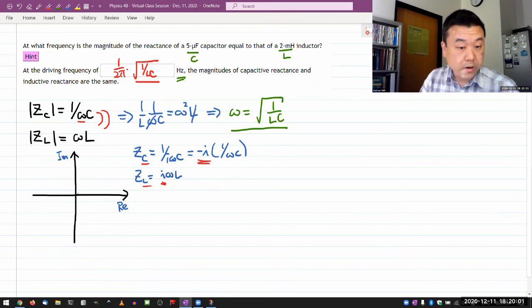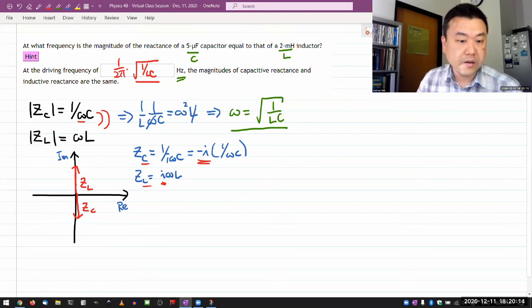So this frequency is where the magnitudes of these two impedances are the same, meaning they will, if you imagine adding them together, add together the normal way on the complex plane, like head to tail. And at this frequency they will add up to zero, they will cancel each other out.